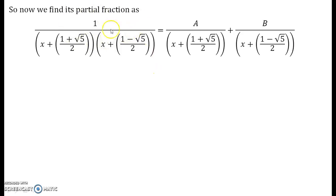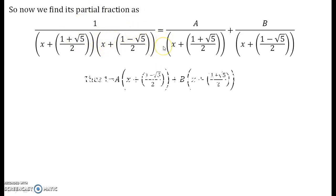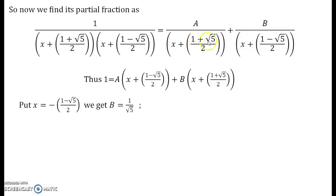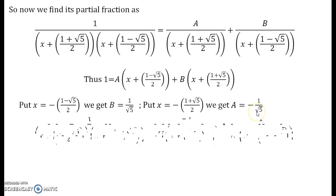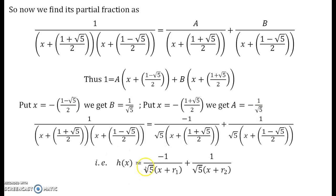We are now going to write the partial fraction for h(x). Since these are distinct roots, putting x equal to negative r1 and negative r2 gives b equal to 1 by root 5 and a equal to minus 1 by root 5. So h(x) equals minus (1/root 5) times 1/(x plus r1) plus (1/root 5) times 1/(x plus r2).